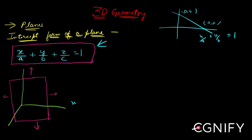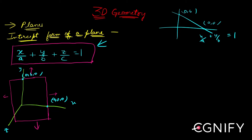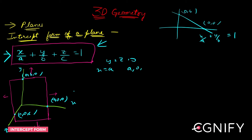This plane intersects the x-axis, y-axis, and z-axis at three points: the first point is (a, 0, 0), the second is (0, b, 0), and the third is (0, 0, c). If you put y = z = 0 in the equation, you get x = a, confirming that (a, 0, 0) lies on the plane.